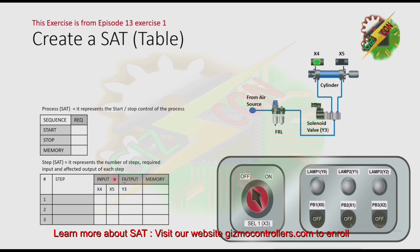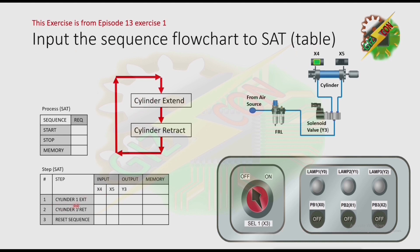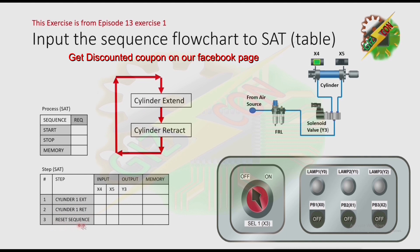When creating a SAC, you need to include on this table the inputs and outputs included in the sequence. Next, input the sequence flowchart to the SAC table. We have cylinder 1 extend here, then cylinder 1 retract. That is the end of the cycle and it will just loop, that's why we have reset sequence here.